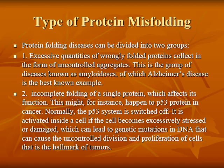Types of protein misfolding: proteins are divided into two groups. The first group involves an excessive quantity of wrongly folded proteins collected in the form of uncontrolled aggregated protein. This group of diseases is known as amyloidosis, of which Alzheimer's disease is the best-known example.